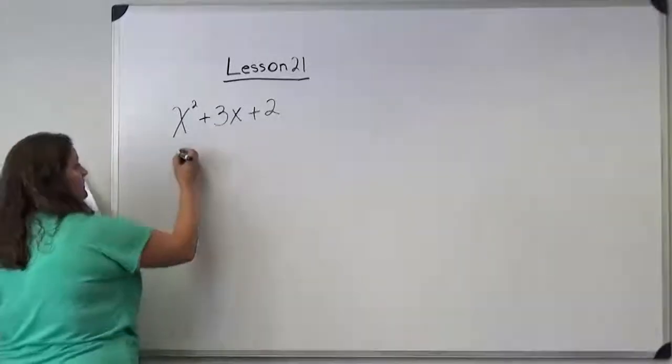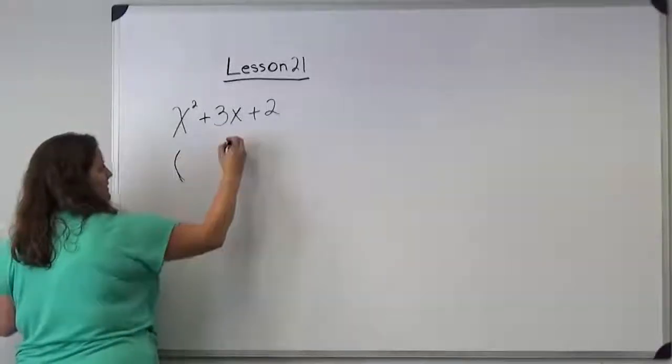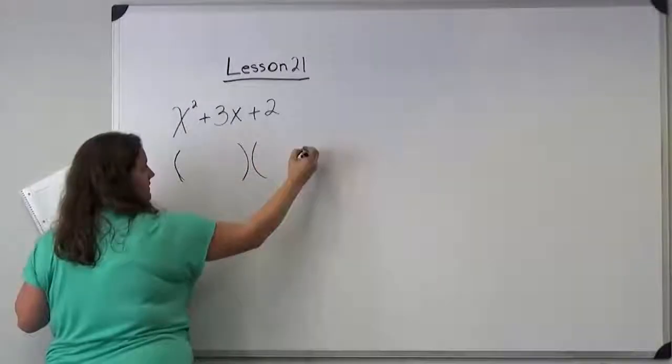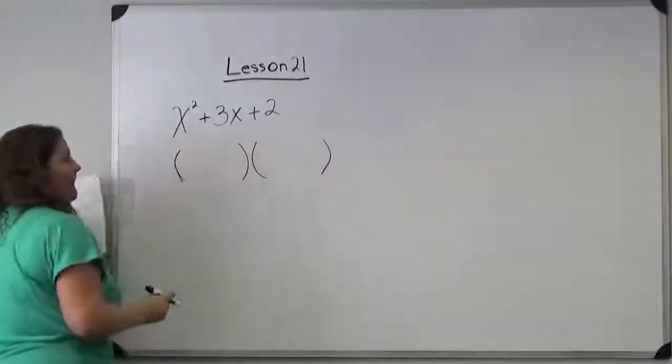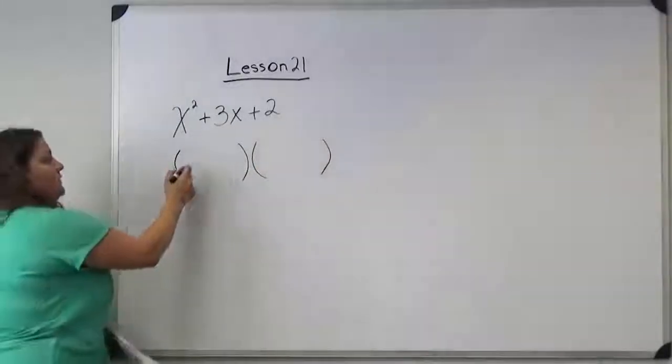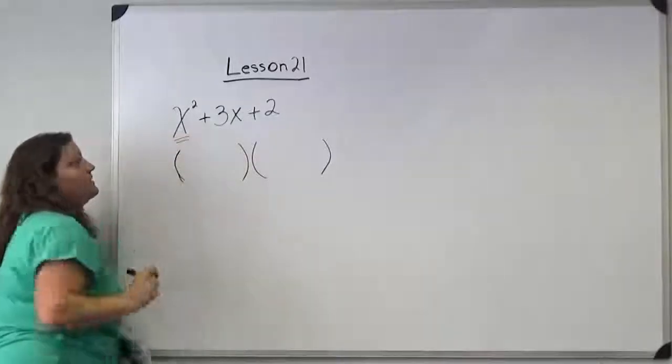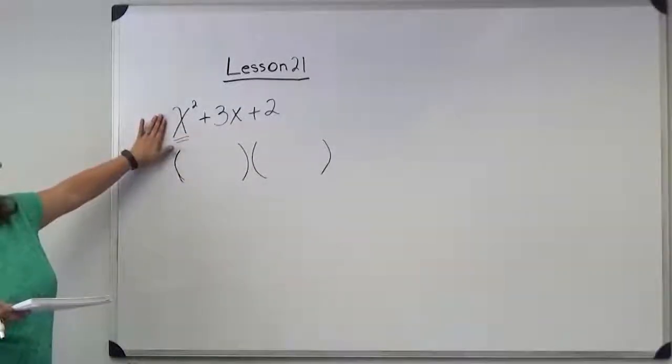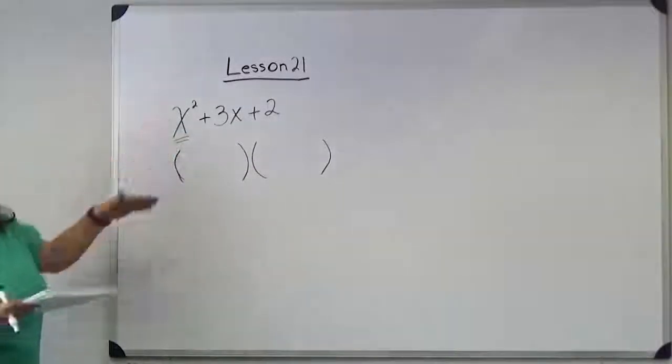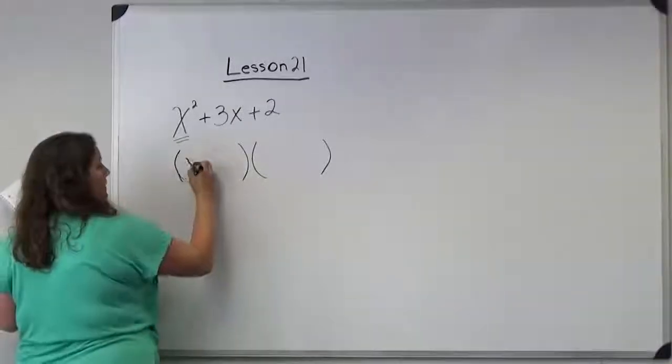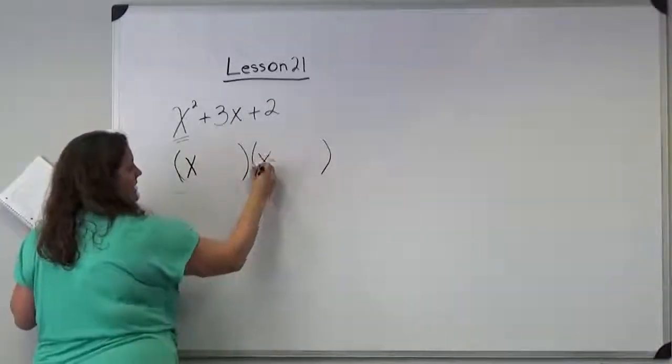So the first thing I'm going to do is set up my parentheses. Your first value in the parentheses is the first term broken down to its simplest forms. We know x squared is x times x.